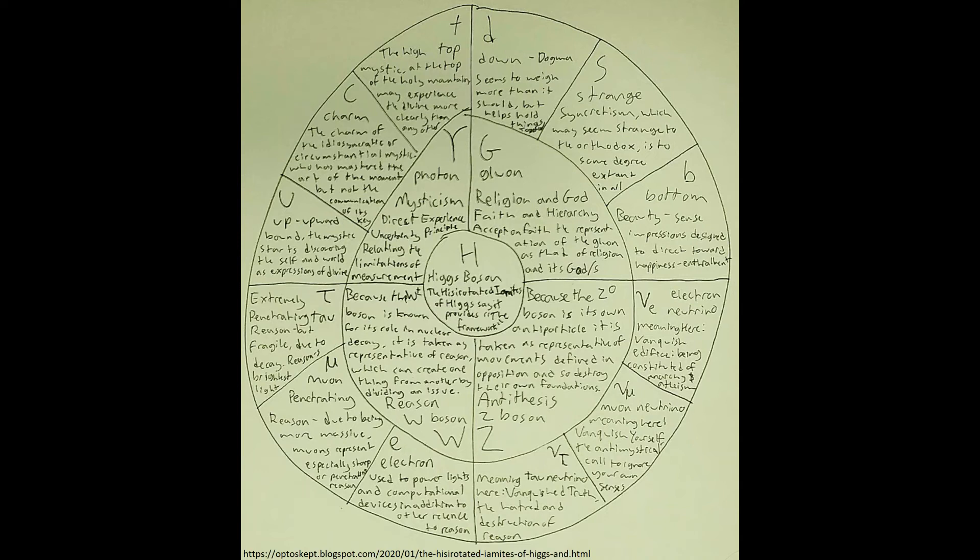I think that's all the time I have for now, hopefully more to come later on the W and Higgs bosons. Alright, getting back into it, we come to the W boson, which here is representative of reason due to its role in nuclear decay being considered like reason's affinity for dividing a large issue into smaller ones, transforming it in the process. It is divided into the electron, muon and tau particles.